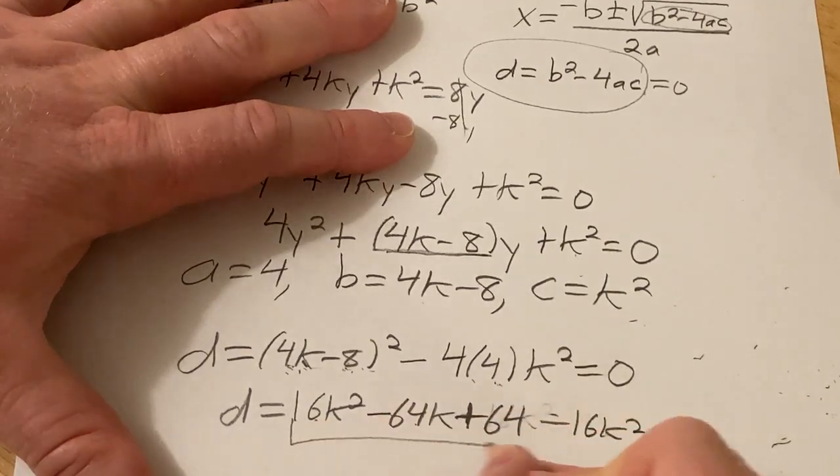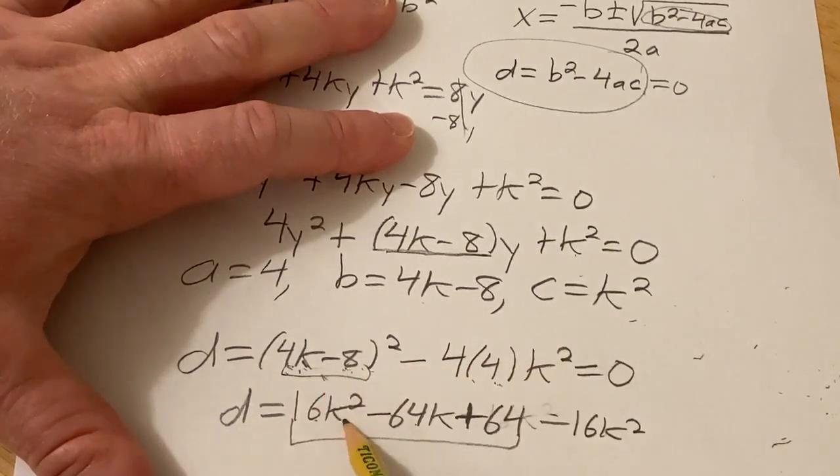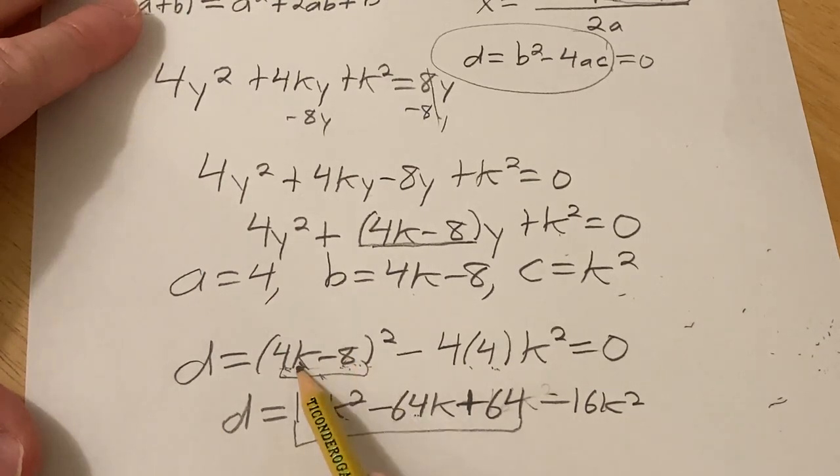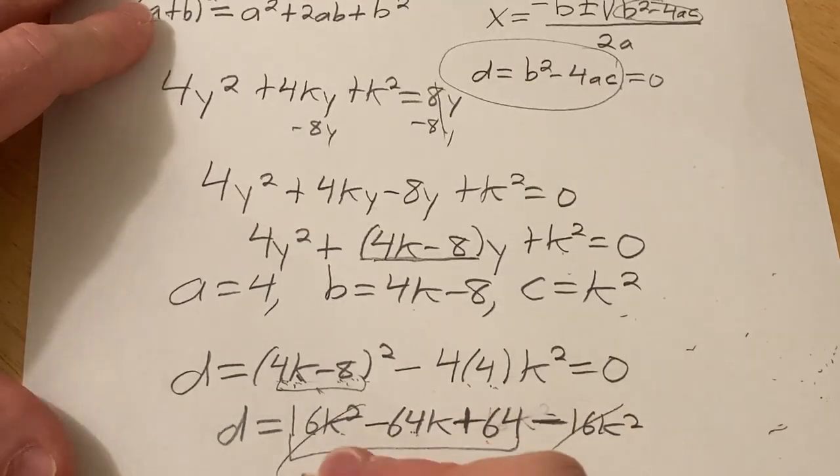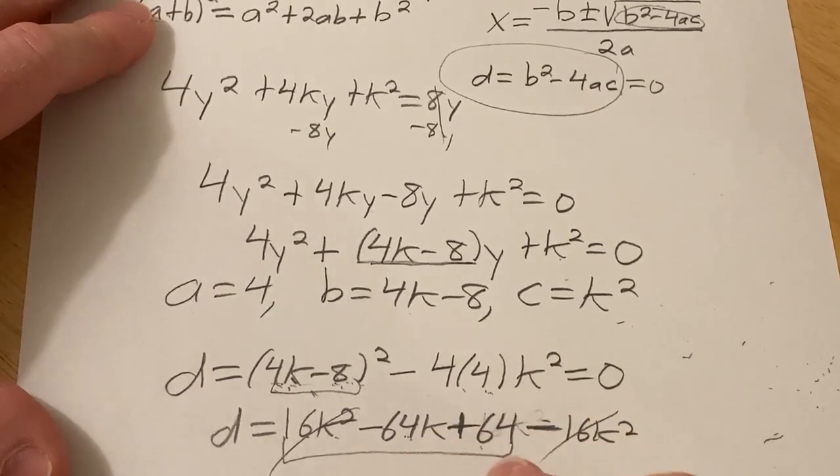All right, so all of this is this, right, you square the first one, multiply these and double them, 32 times 2 is 64, square the 8, you get 64, and then minus 16k². These cancel, so we get d equals -64k + 64 equal to 0.